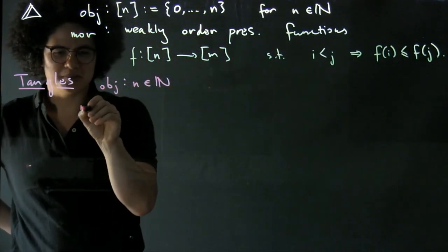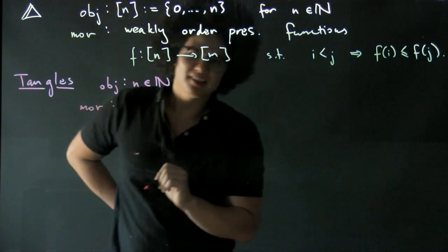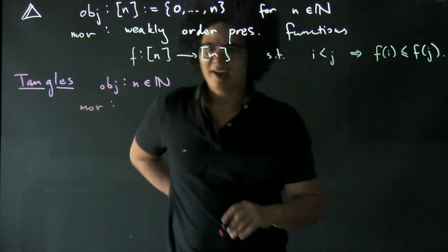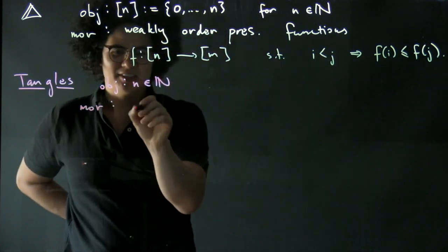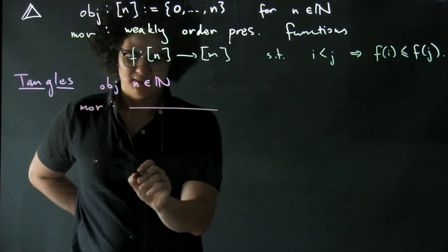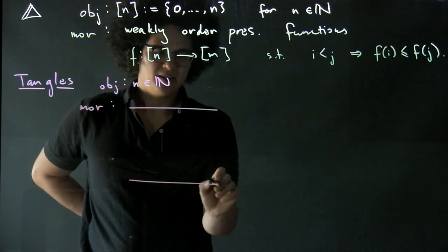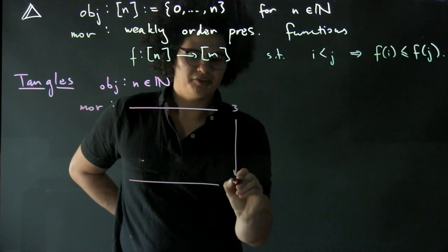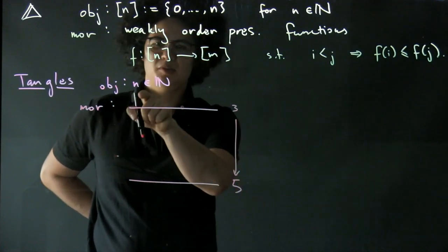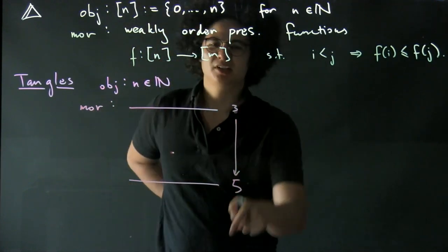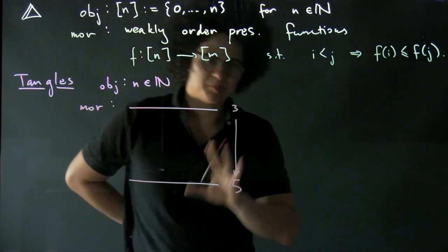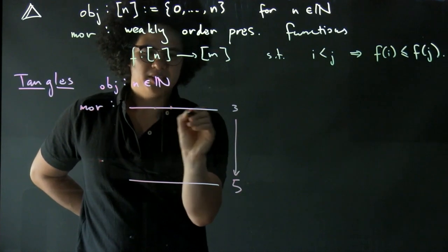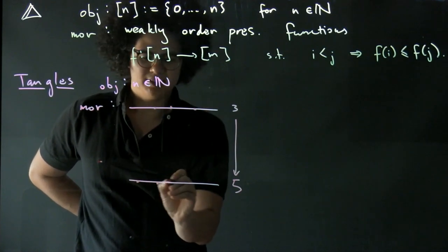But the morphisms are interesting and they're diagrams of the following types. So I'm not going to write down strictly what this is because it's quite messy. But I'm going to say that, say a morphism from three to five, because recall the objects are natural numbers, so we're looking for maps between that. Our morphisms are between natural numbers. And I'm going to put three dots up here and I'm going to put five dots down here.